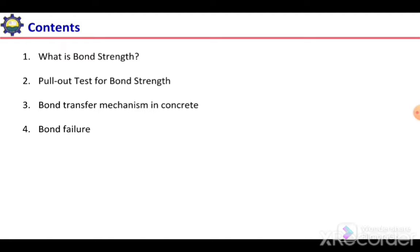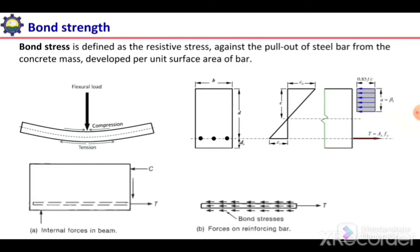We will discuss the pullout test for bond strength, bond transfer mechanism in concrete, and bond failure. First of all, bond strength is defined as the resistive stress against the pullout of steel bar from the concrete mass, developed by unit surface area of bar. To understand the concept of bond stress, we first need to understand the mechanism of flexural resistance.